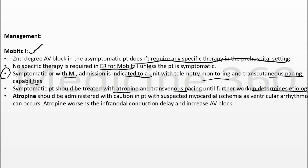Treatment with atropine and transcutaneous pacing is temporary, and the permanent treatment is the transvenous pacemaker. Before giving atropine, we should consider that it cannot be given to patients with suspected myocardial ischemia or ventricular arrhythmia, because atropine worsens infranodal delay and increases the AV block.